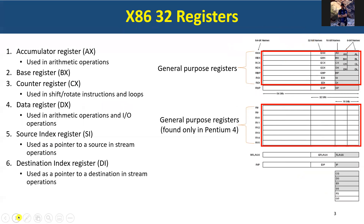We're going to highlight some of them, and as we go deeper in the course, we're going to learn more about all these registers. The first group is called general purpose registers, shown here — like RAX, RBX, RCX, RDX, RBP, RSI, RDI. The last one doesn't belong to them. We also have R8, R9, R10 until R15. These are called general purpose registers.